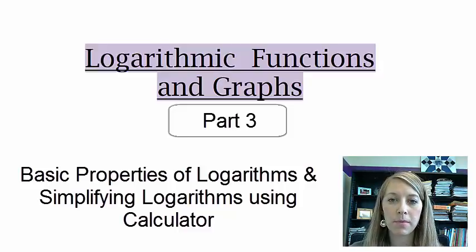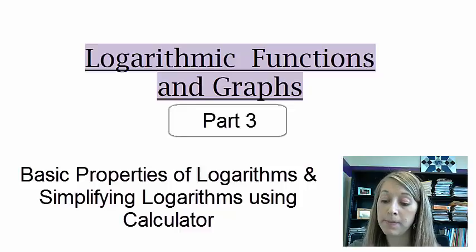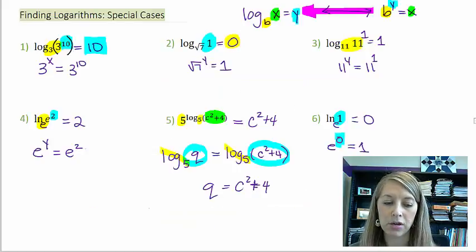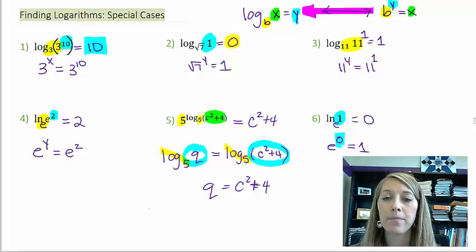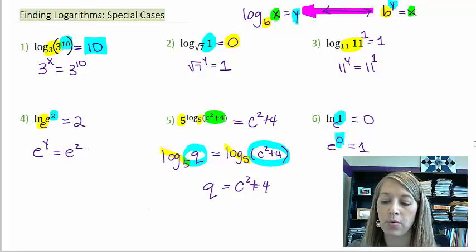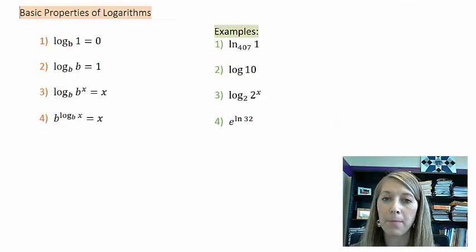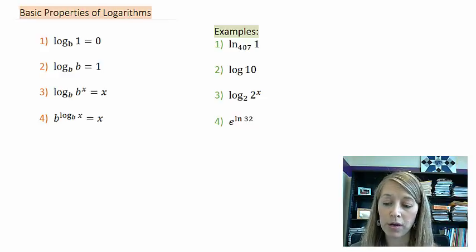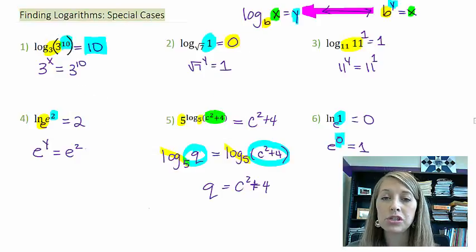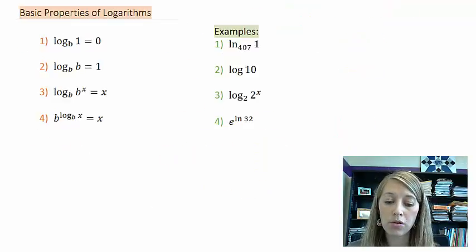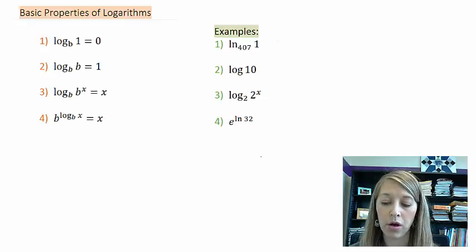In the last video we worked through some examples — some special cases — which is what this is here. These special cases actually define some properties that become the same for any of these situations. So that's what we're going to do now: talk about some basic properties of logs. We've actually worked through each and every one of these in the last video; you just didn't know they defined whole properties in themselves. So we're going to work through them again by proving these, and then do some examples.